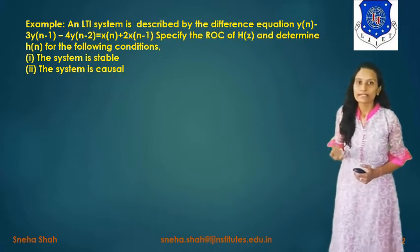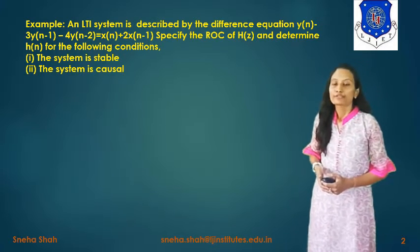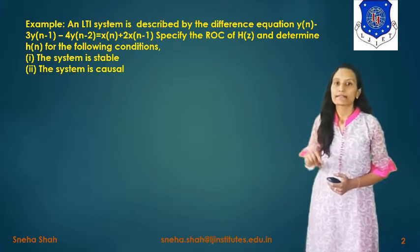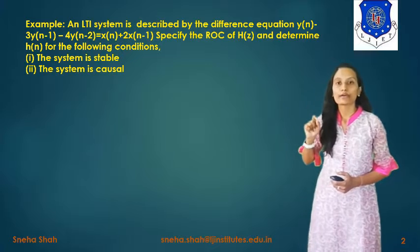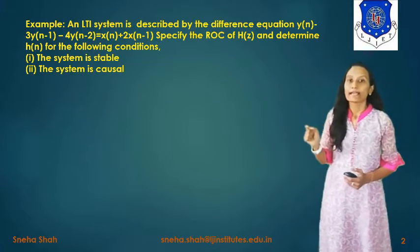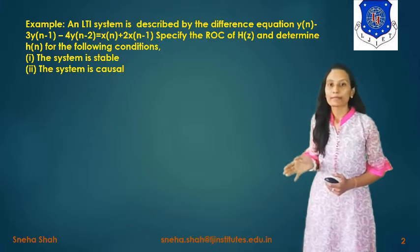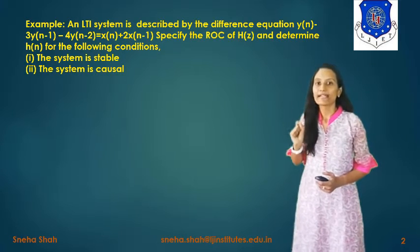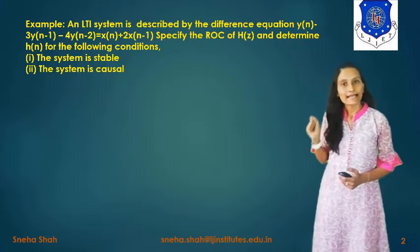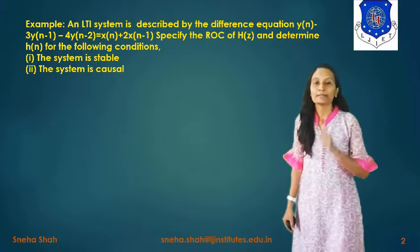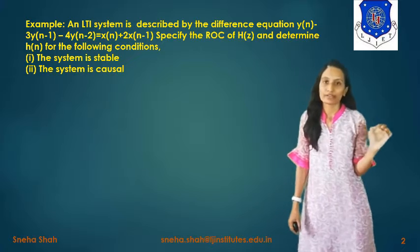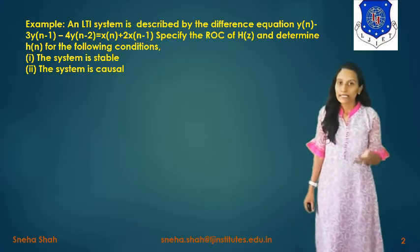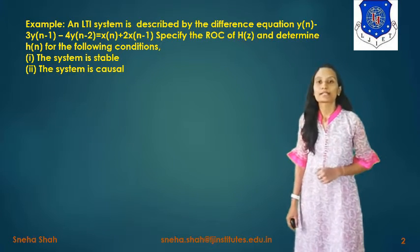We have to find out whether the given system is stable or not, as well as whether it is causal or non-causal. To solve this example, the first step is to find out the Z-transform of the difference equation, then apply the time-shifting property, then simplify it, and find out Y(z)/X(z), which will be considered as H(z). Because output upon input gives the system transfer function — output is y, input is x, so y/x gives H(z).